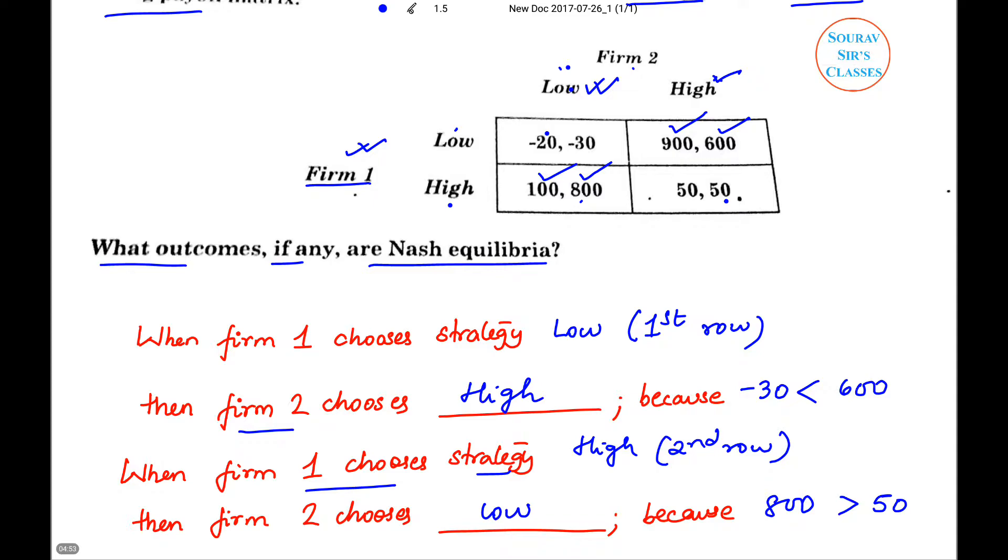So what we see, we have two equilibrium, not one Nash equilibrium. One is low-high and the other is high-low.